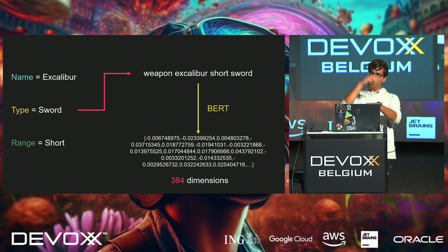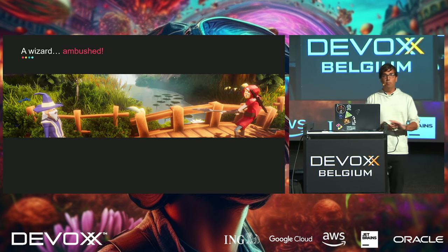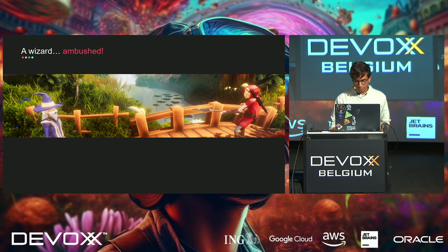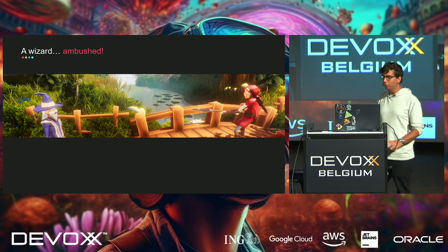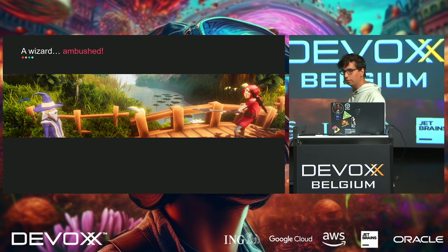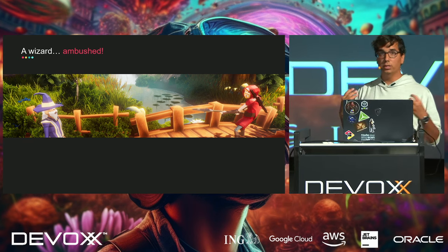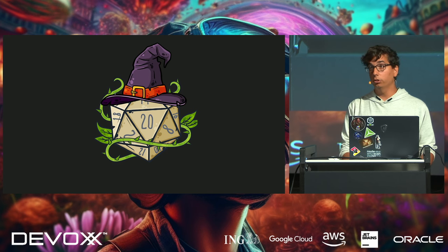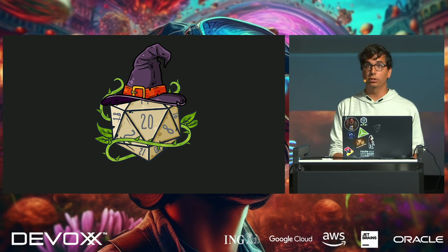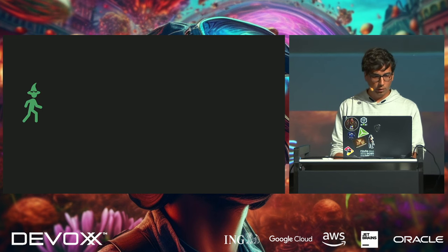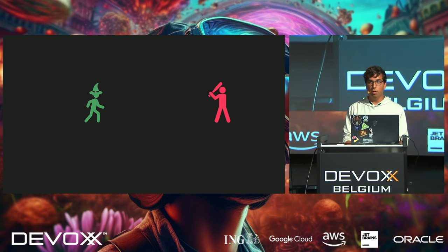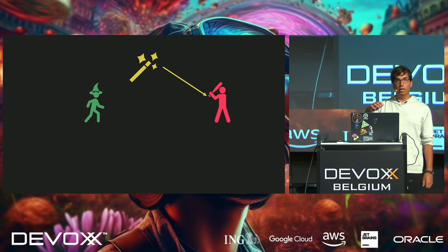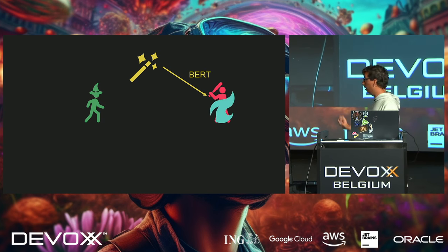For our next demo — anybody play Dungeons & Dragons or the new Baldur's Gate 3? We have a wizard that is ambushed. I found a D&D spell dataset on Kaggle — it has all the spells from the Player's Handbook — and we're going to use it to help this forgetful wizard cast spells to defeat the thugs. We'll use a BERT model for this.